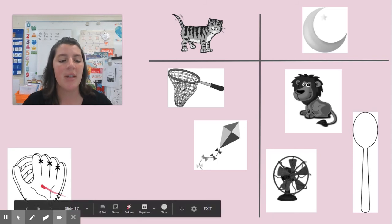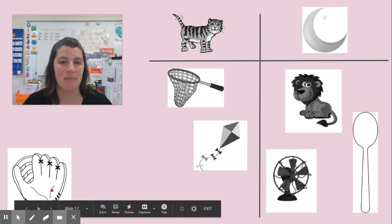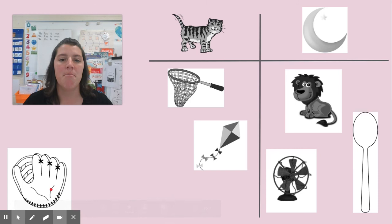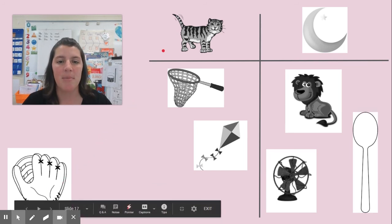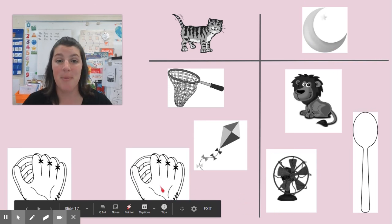Here's our next one. This is a baseball mitt. Say the word mitt. Take your finger and show me where I would put the word mitt. Which column has the same ending sound as mitt? Would it be cat or moon? There's our mitt — it's under the word cat.